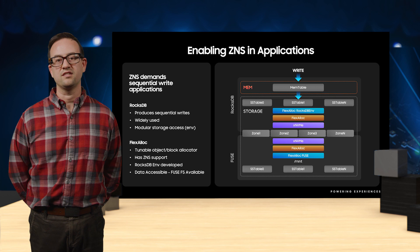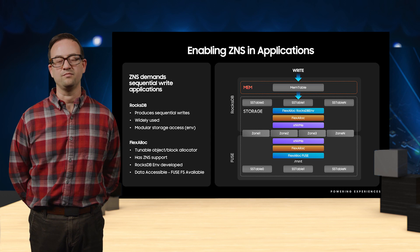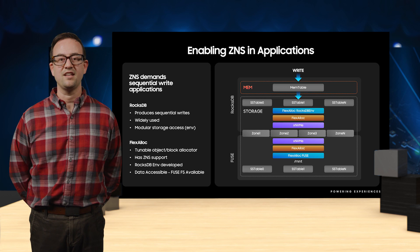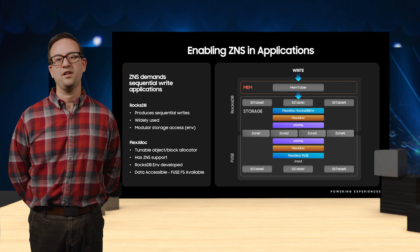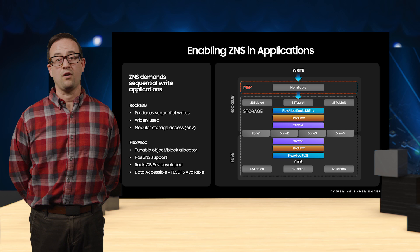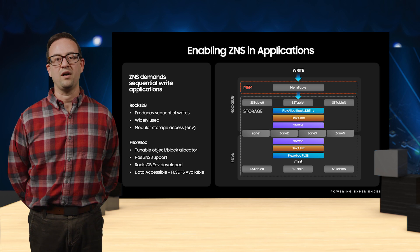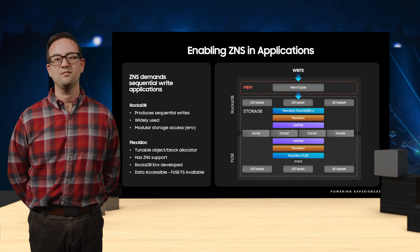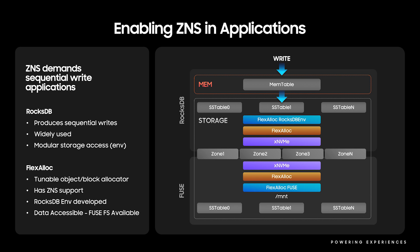The basic flow for application writes is that they are first coalesced in memory inside of the mem table. Data within mem tables is eventually written sequentially into sorted string table files, which are later merged as the number of files grows at a given level. All writes to files used by RocksDB are appended to each sorted string table file, which is compliant with the ZNS sequential zone access requirements. RocksDB is widely used and has been integrated as a storage engine for MySQL. We have leveraged RocksDB's well-defined storage access API, denoted as an env, to write a ZNS-compatible RocksDB env built on top of FlexAlloc.